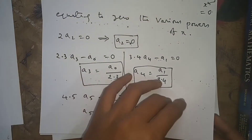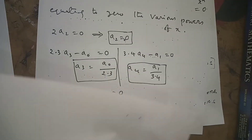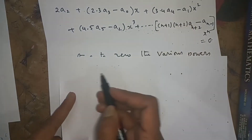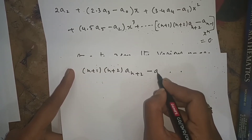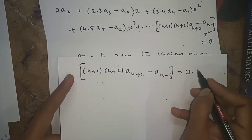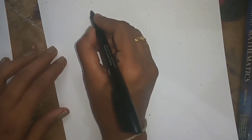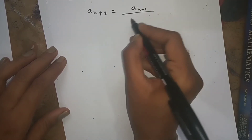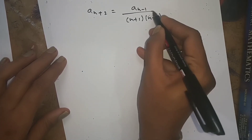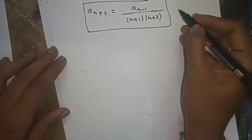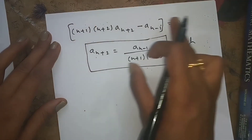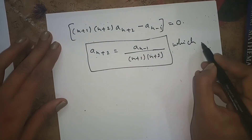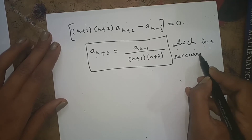Now equating the nth term to zero gives (n+1)(n+2)·aₙ₊₂ minus aₙ₋₁ = 0, which is the recurrence relation: aₙ₊₂ = aₙ₋₁ / [(n+1)(n+2)]. This recurrence relation allows us to find all higher coefficients by substituting successive values of n.